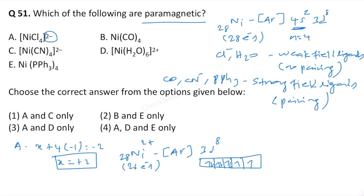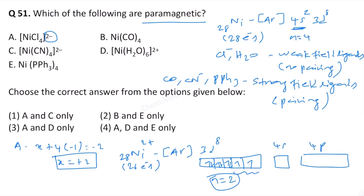Chlorine is a weak field ligand, so no pairing occurs. With 8 electrons in 3d, we have two unpaired electrons, meaning complex A is paramagnetic. The metal uses 4s and 4p orbitals, so the hybridization is sp³. Therefore option 2 is wrong because A is not mentioned there.